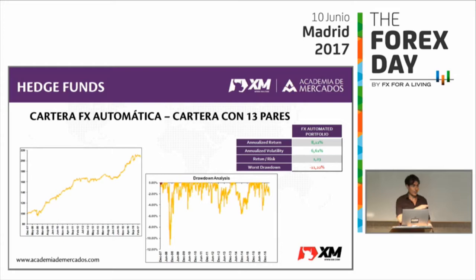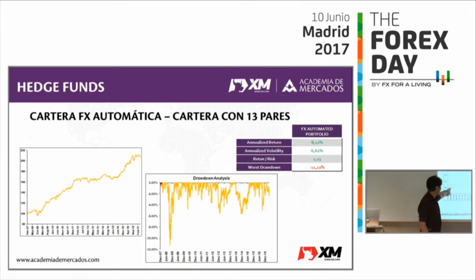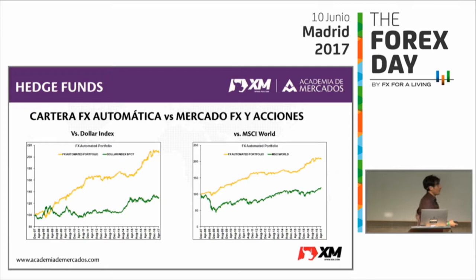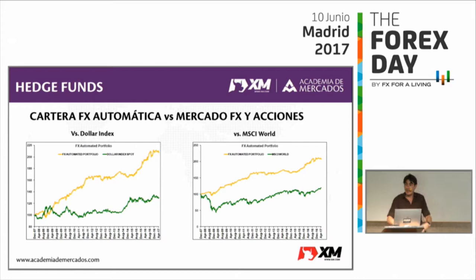Aquí tenemos análisis de drawdowns. Los drawdowns es la caída, es decir, cada caída que tiene el liquidativo aunque esto gana en el largo plazo. Los sistemas de trading se mueven, igual que se mueve un fondo de bolsa. Aquí tenemos otro ejemplo: no solo retorno sino descorrelación, que no se parezca al resto del mercado. Vemos una comparativa contra el dólar index para ver que no se parece en nada a la divisa aunque haga divisa, y tampoco se parece a la bolsa.